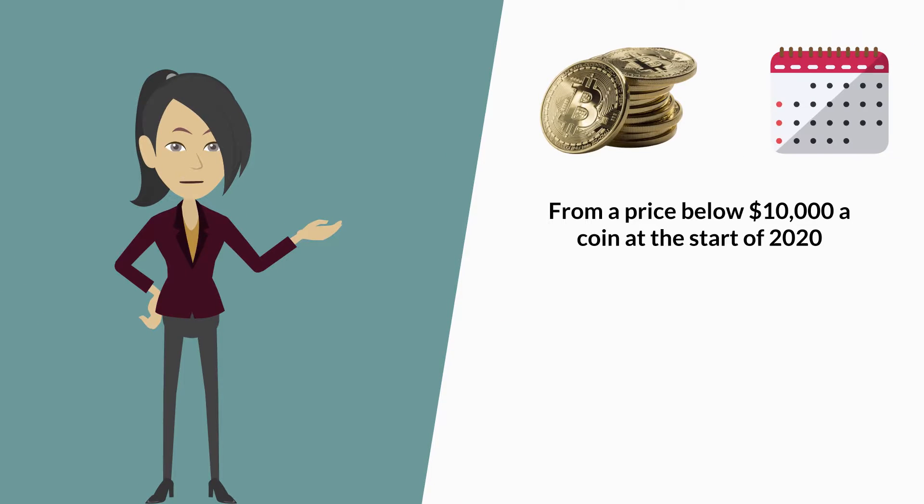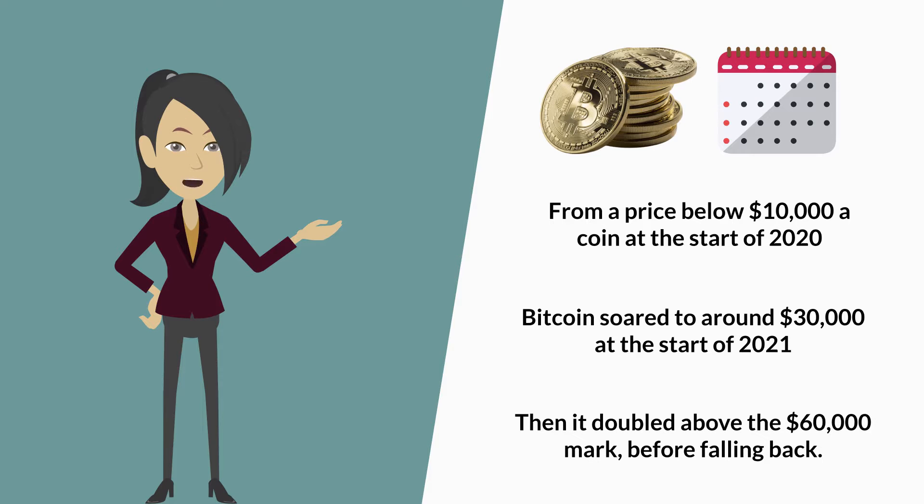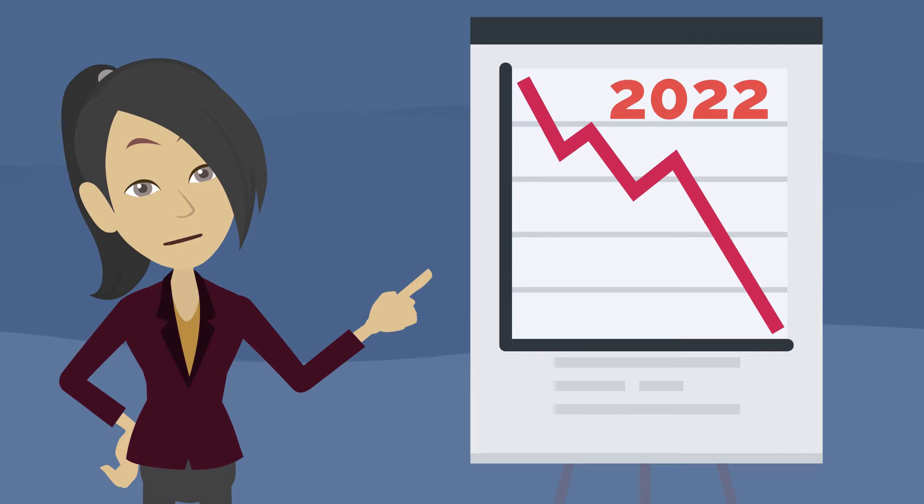For example, from a price below $10,000 a coin at the start of 2020, Bitcoin soared to around $30,000 at the start of 2021 and then doubled above the $60,000 mark before falling back. But the start of 2022 was rough for cryptocurrency, as traders increasingly sold their positions and most of the top cryptos declined sharply.